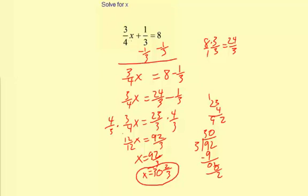Now the other way to solve this would be multiply through by the least common multiple. 4 times 3 is 12. So let me show you how that works. We'll have 12 times 3/4x and then plus 12 times 1/3 equals 12 times 8.